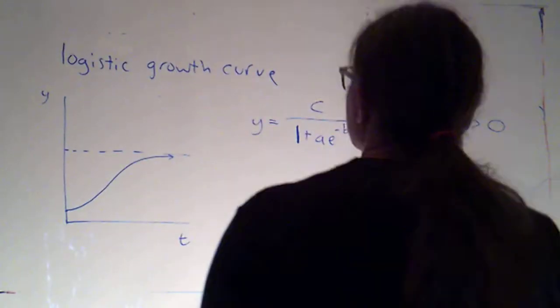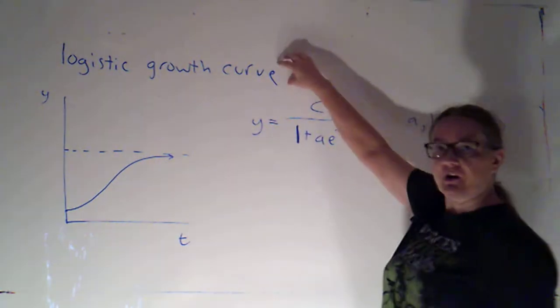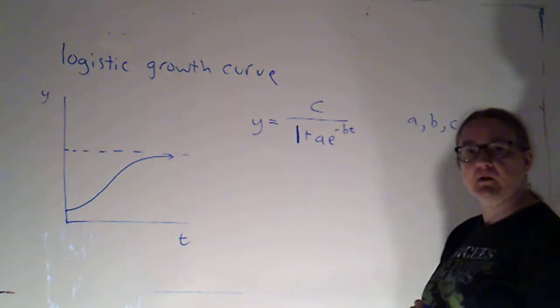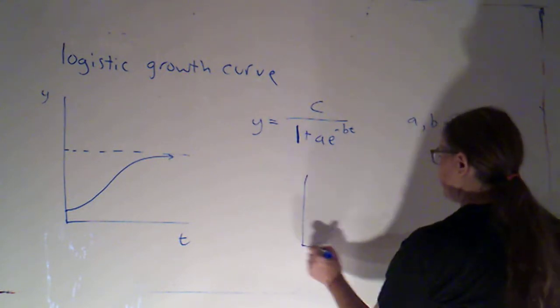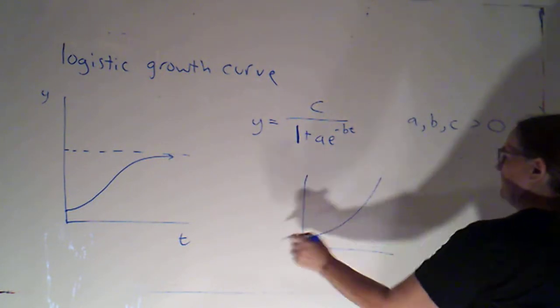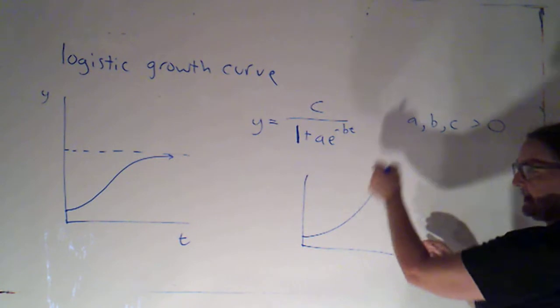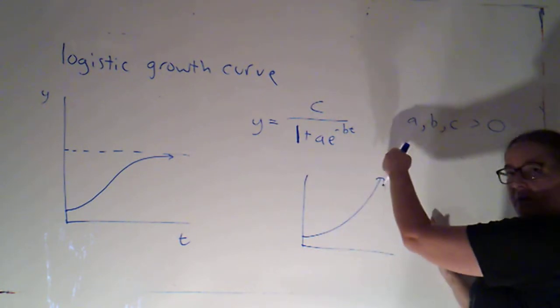The last example I want to take a look at is called the logistic growth curve. I referred to this a little bit earlier. If I have exponential growth, just in the first quadrant, that would look something like this. This is something that's growing without bound.